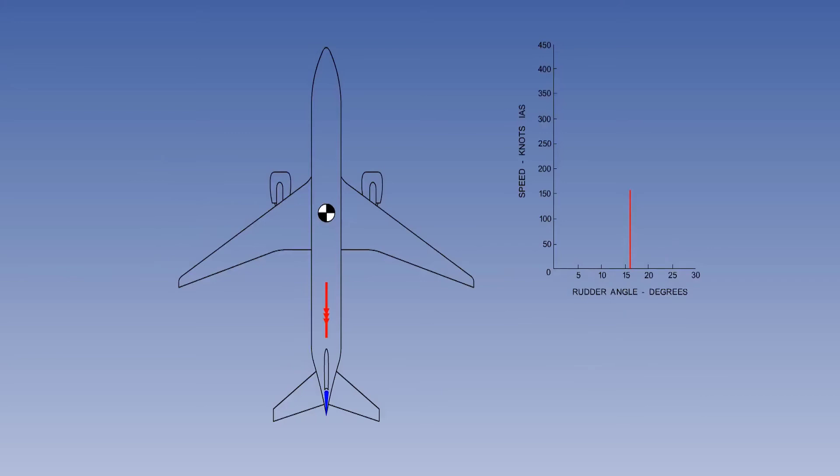The rudder on any aeroplane must be powerful enough for the worst case event. For the rudder of a large modern jet transport aircraft, the worst case event is an engine failure at low IAS.